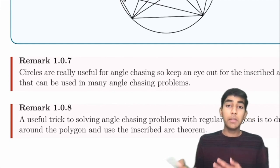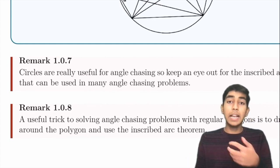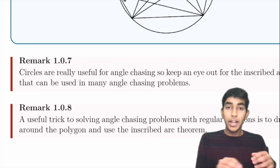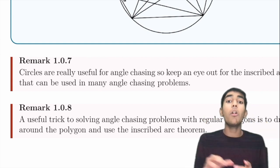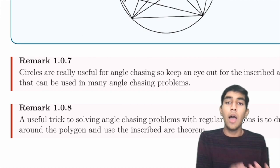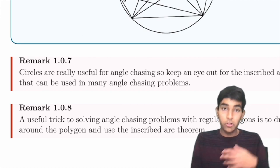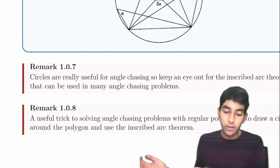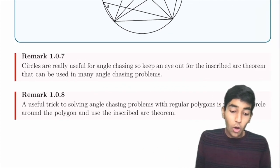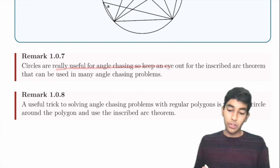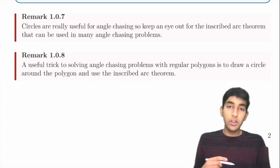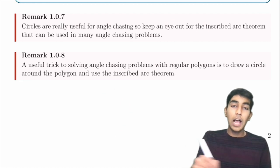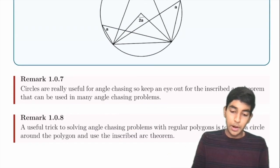In angle-chasing problems, the key idea is to assign variables to some angle and then, using the properties we've learned, find all the angles in terms of that variable and solve a simple equation. Set variables for angles you don't know and use these properties to find equations. Circles are also very useful — like the inscribed angle theorem. If you have a regular polygon, sometimes drawing a circle around it can help because you can then use the inscribed arc theorem.